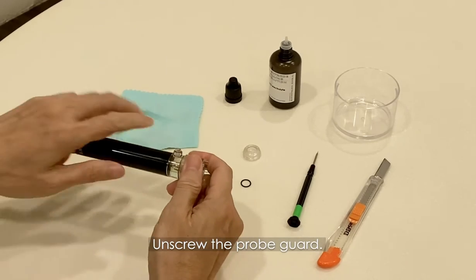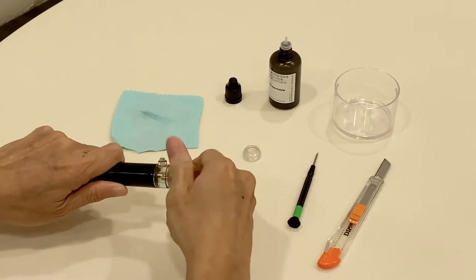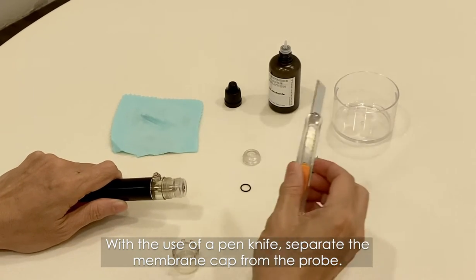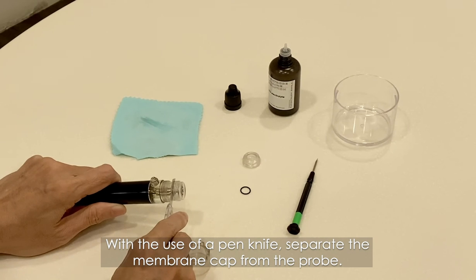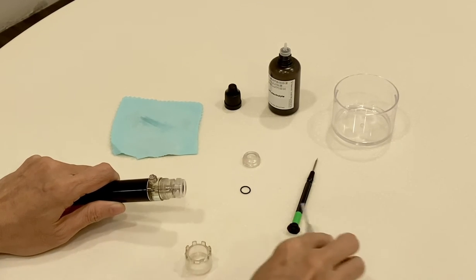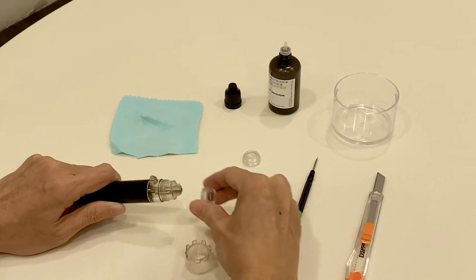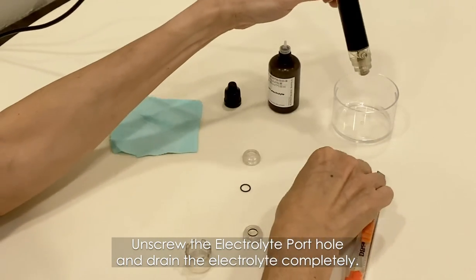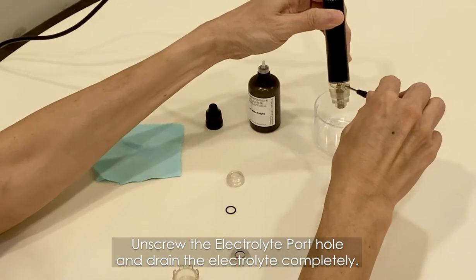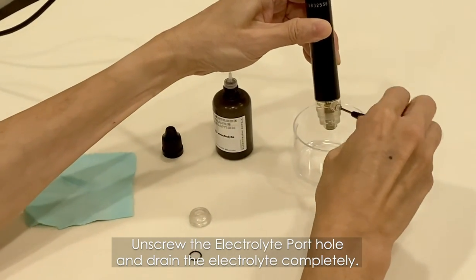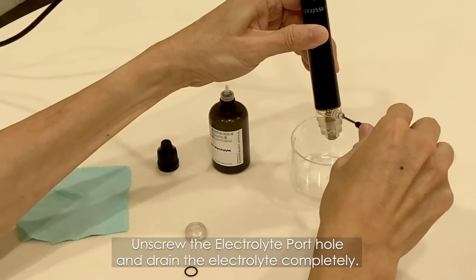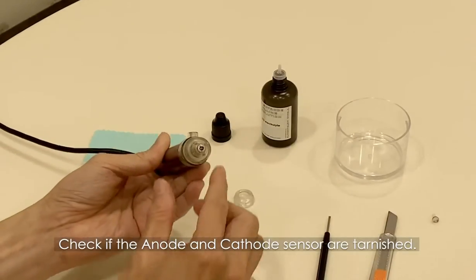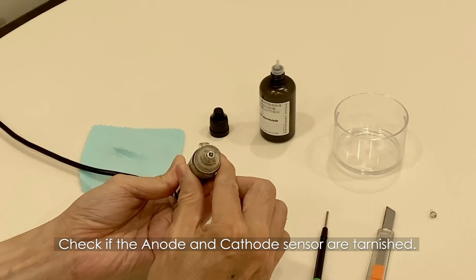Unscrew the probe guard. With the use of a pen knife, separate the membrane cap from the probe. Unscrew the electrolyte pothole and drain the electrolyte completely.